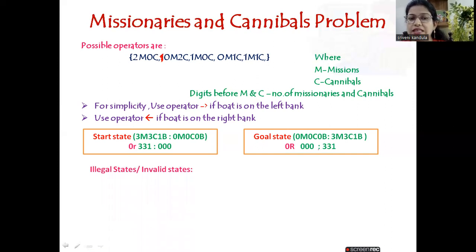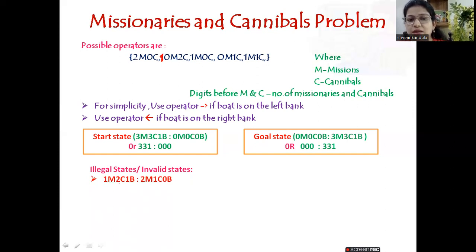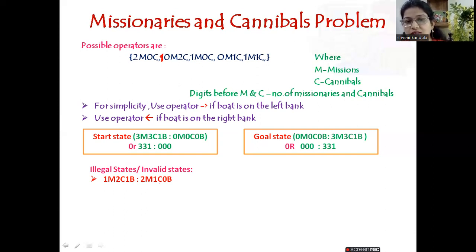Now let us look at illegal or invalid states. For example, if the state on the left bank is one missionary, two cannibals, and one boat, and the operator sends one missionary and zero cannibals across, then two cannibals remain on the left bank, outnumbering the missionary. The cannibals will eat the missionary. This should not happen, so this is an illegal state.